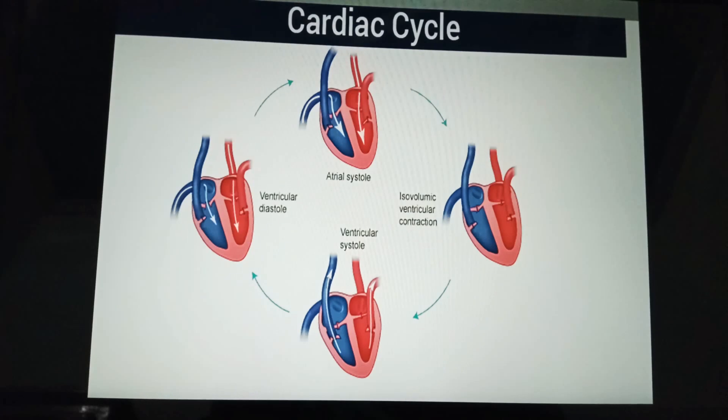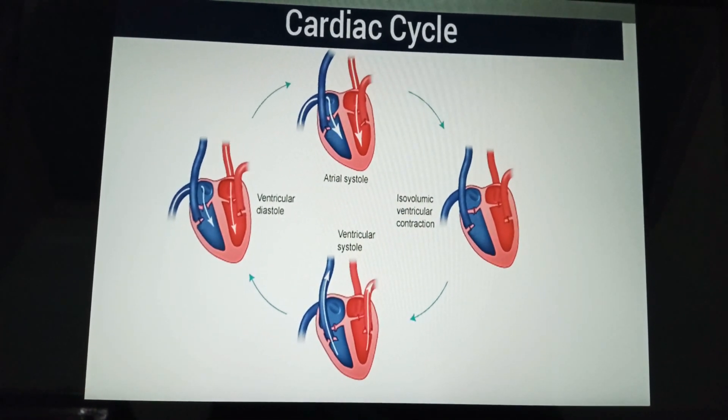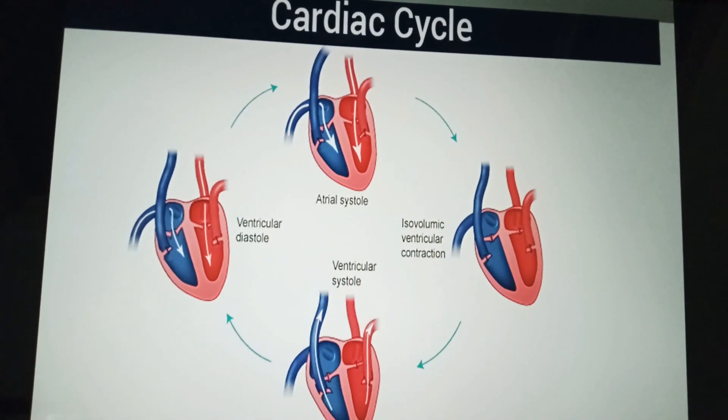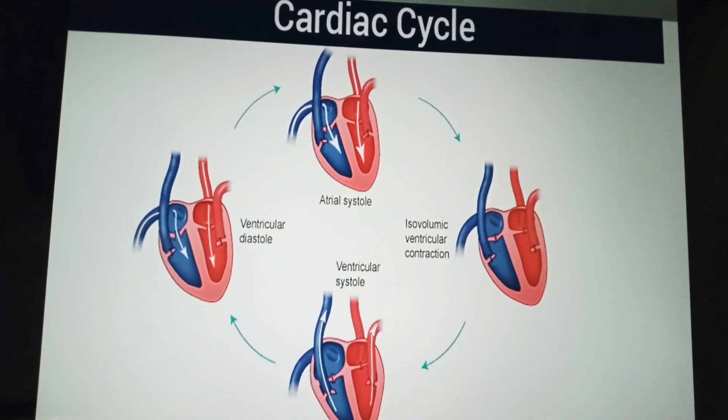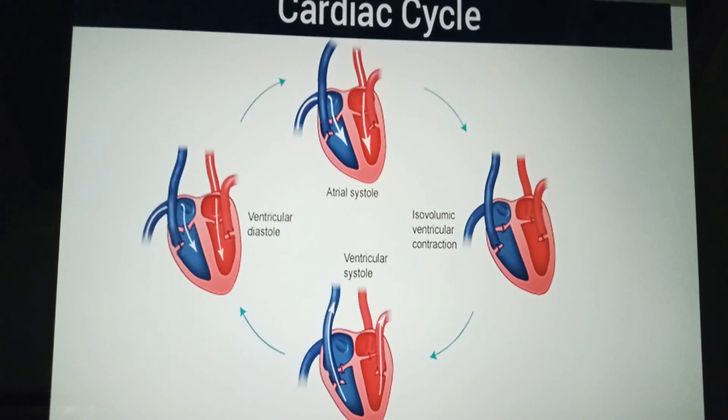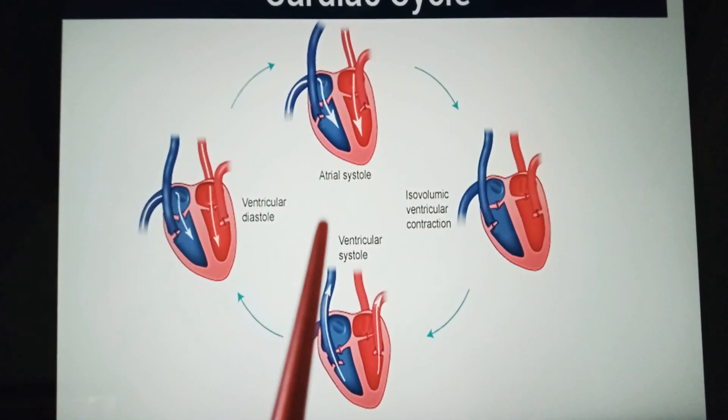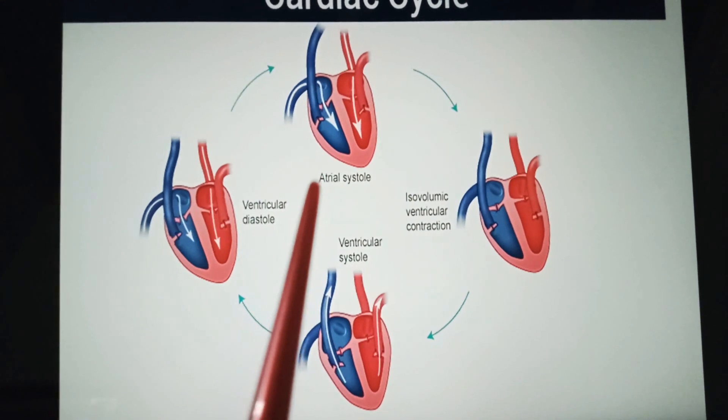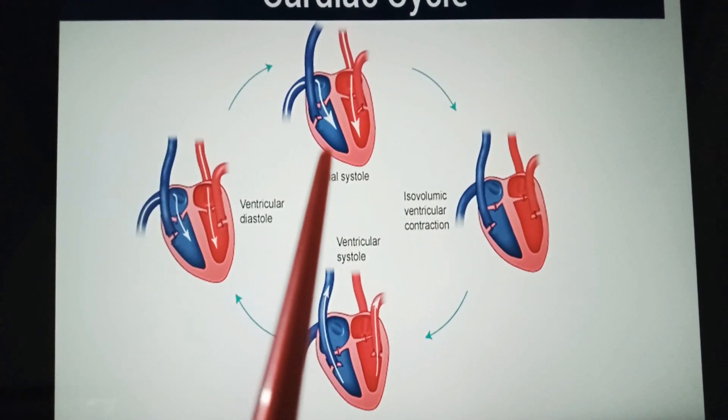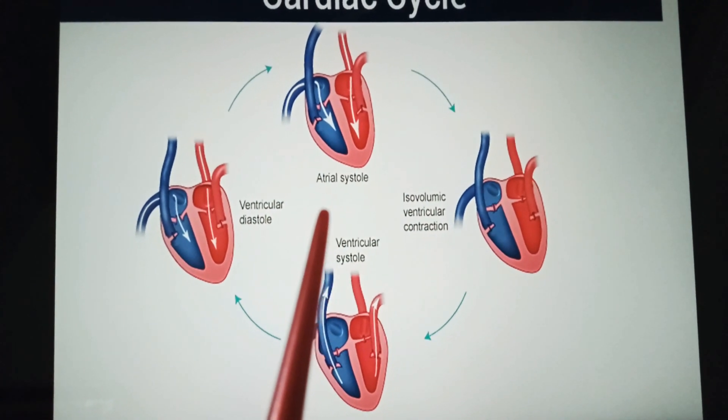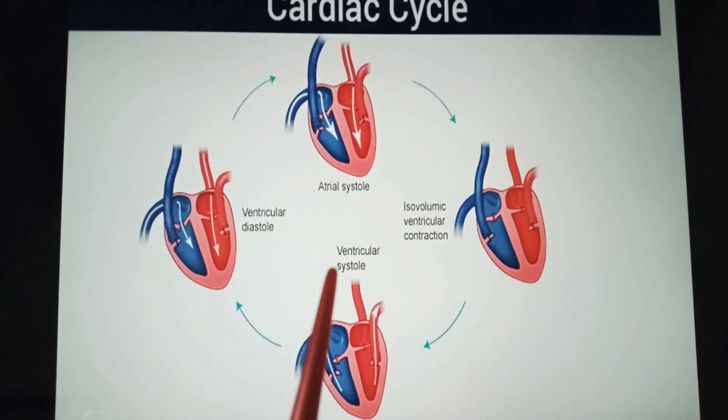The complete cardiac cycle consists of the following steps: atria and ventricles relax and blood is filled in atria. This period is called cardiac diastole. Immediately after their filling, both atria contract and pump blood towards ventricles. This period is known as atrial systole.